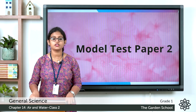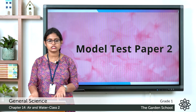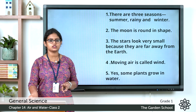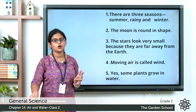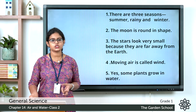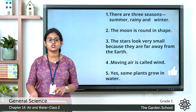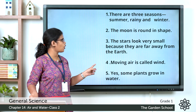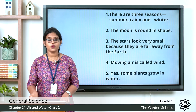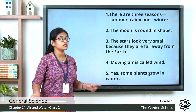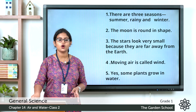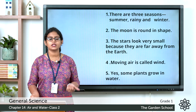Answer the following questions. First: how many seasons are there? There are three seasons — summer, rainy and winter. Second: what is the shape of the moon? The moon is round in shape. Third: why do stars look very small? Stars look small because they are far away from the earth. Fourth: what is moving air called? Moving air is called wind. Fifth: do plants grow in water? Yes, some plants grow in water — for example, lotus.